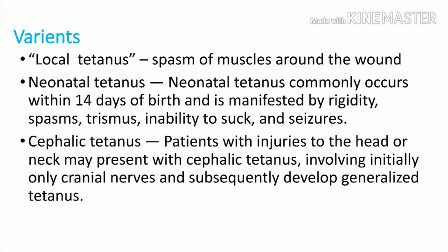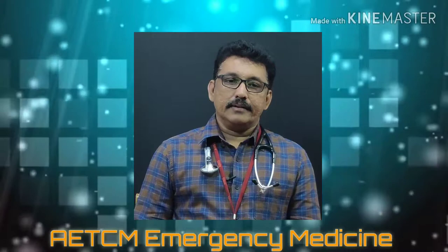There are variants of tetanus. Local tetanus involves spasm of muscles only around the wound. Neonatal tetanus occurs within 14 days of birth, manifesting with rigidity, spasm, trismus, inability to suck, and seizures. Cephalic tetanus occurs with injuries to the head or neck, presenting with spasm of the head and neck and possible cranial nerve involvement, before becoming generalized tetanus.